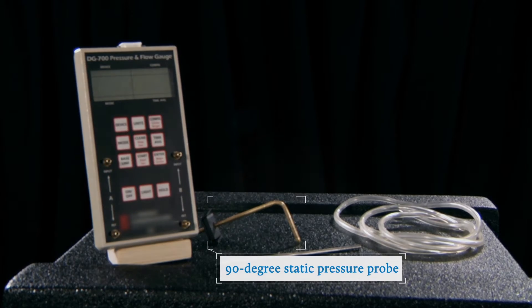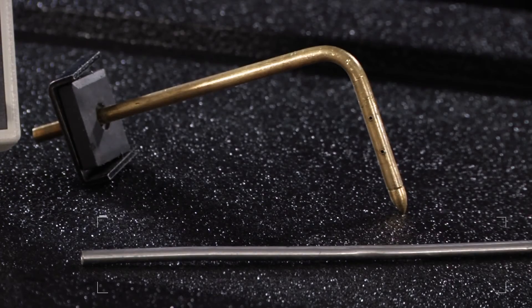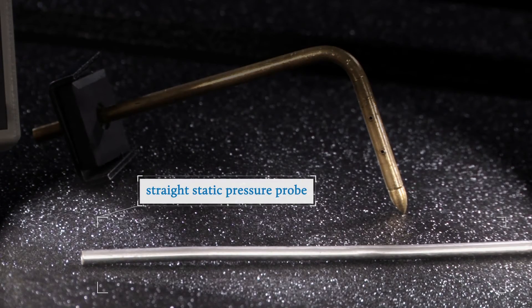To measure the static pressure, James will be using a simple static pressure probe, like this. Now, depending on where the hole is for measuring the static pressure, it might be easier to use a straight static pressure probe instead.